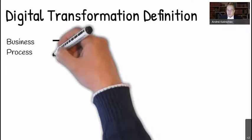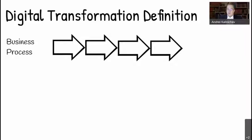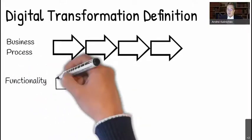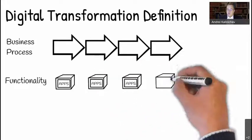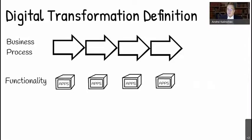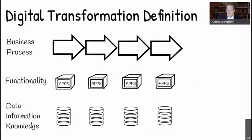Now let's look at the definition part for digital transformation. The most important part, in my opinion, is of course the business process that we're trying to digitalize. Business process really defines how we do things, why we do things, and defines the workflows for various activities in various domains. Of course we have functionality — in the software world we have applications which support particular types of activity or segments of the business process. And of course we have data, information and knowledge.